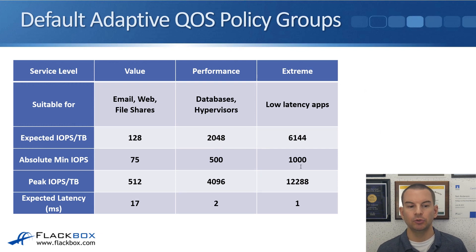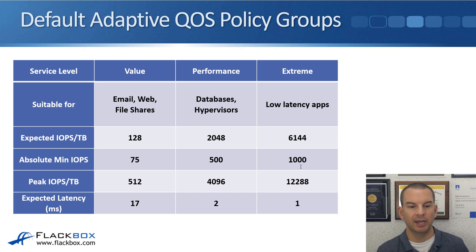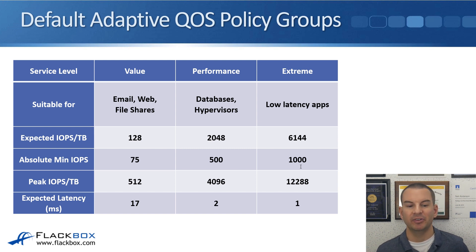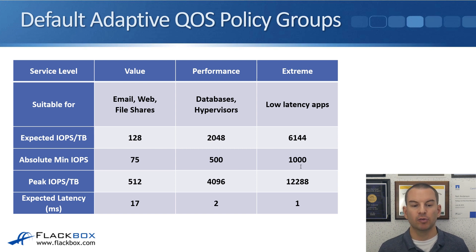With adaptive QoS, there are default adaptive QoS policies built into the system. As soon as you install and enable the cluster, these default adaptive QoS policy groups will be there. The defaults are value, performance, and extreme — extreme gives the best performance, value the least. Value is suitable for email, web, and file shares. You can see the expected IOPS, absolute peak, and expected latency values for each. The expected IOPS is the minimum (a QoS floor), and the peak IOPS is the QoS ceiling.